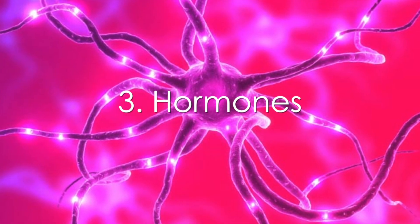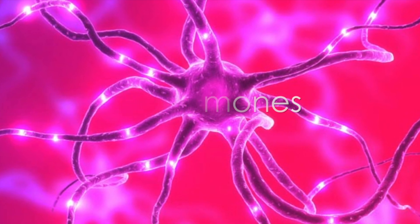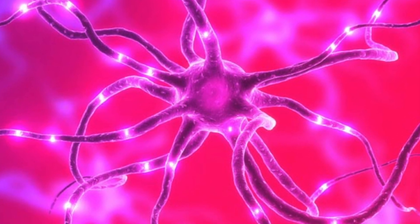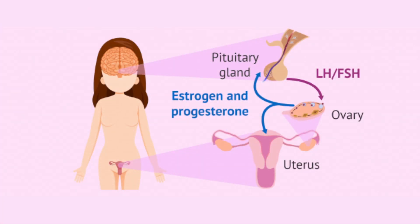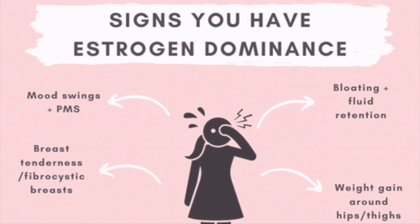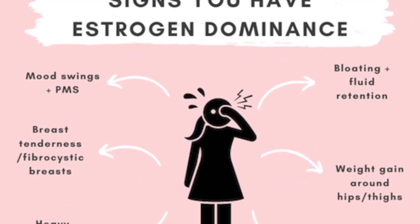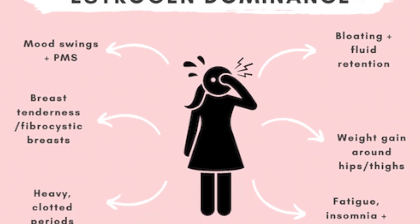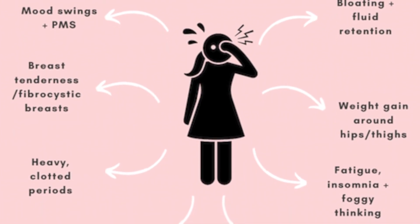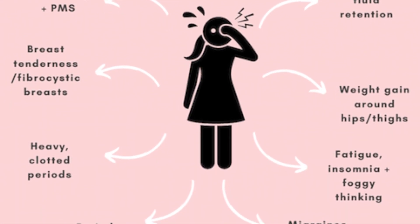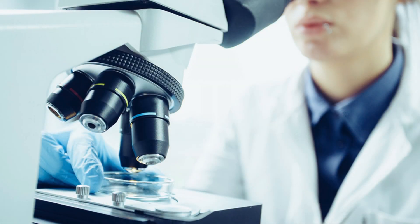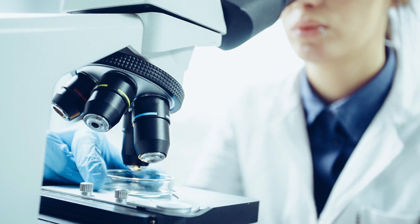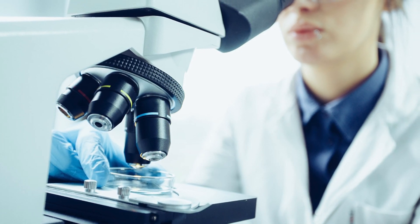Number three: hormones. Hormones, specifically estrogen, play a crucial role in endometriosis. Estrogen promotes the growth and proliferation of endometrial tissue, and women with endometriosis have been shown to have higher levels of estrogen in their bloodstream. However, it is still unclear whether high levels of estrogen cause endometriosis or whether endometriosis causes high levels of estrogen.